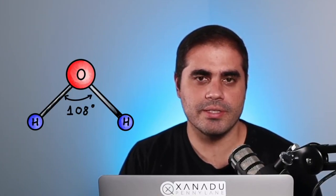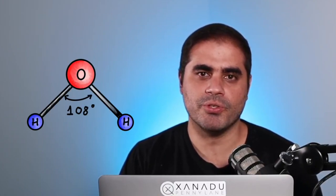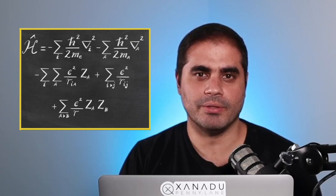Hartree-Fock does two things for us. First, it calculates the molecular geometry, so the positions of where the atomic nuclei are. And with this information, it can do the second thing, which is calculating the Hamiltonian.